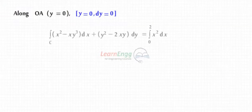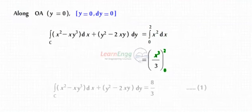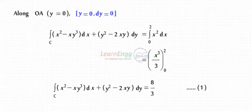Along OA, y equals 0, which implies dy equals 0. By substituting these values, the integral of (x squared minus xy cubed) dx plus (y squared minus 2xy) dy equals 8 by 3.